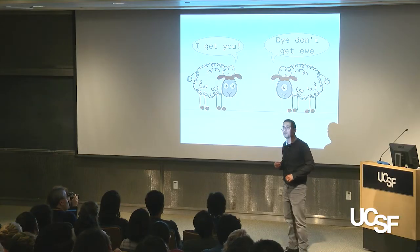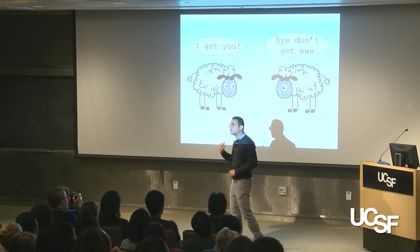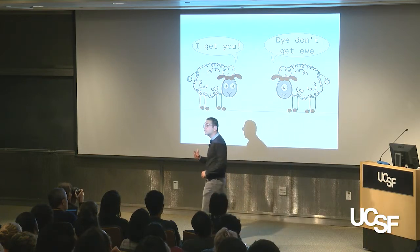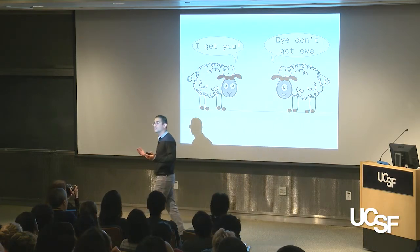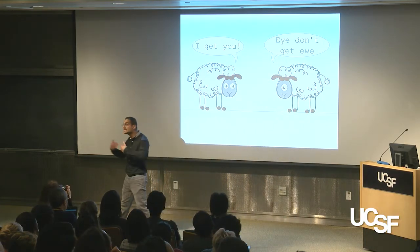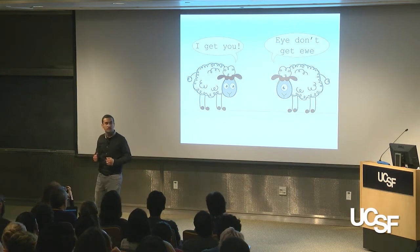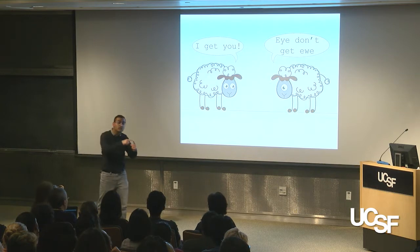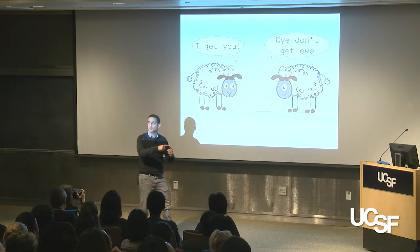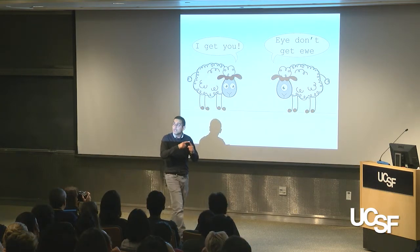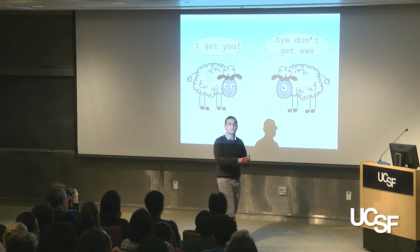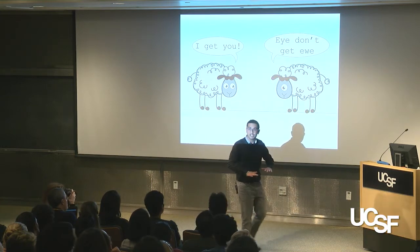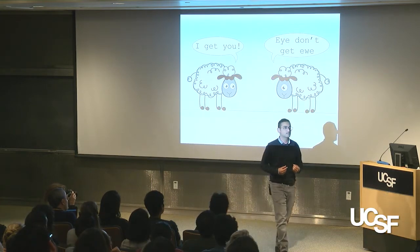So my hypothesis was: if we are able to determine the structure of active smoothened, we can gain insights into smoothened activation. Therefore, the two specific aims of my research are to take a three-dimensional photograph of active smoothened, and based on that, design smarter drugs to inactivate smoothened and hopefully treat disease.